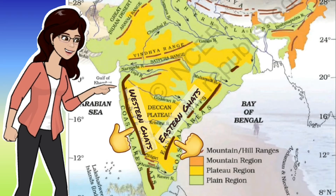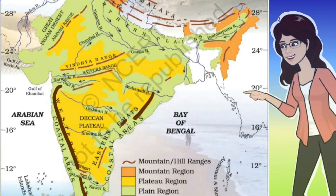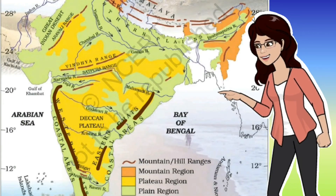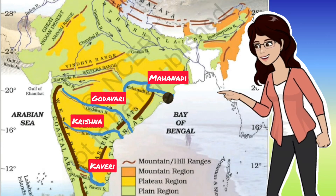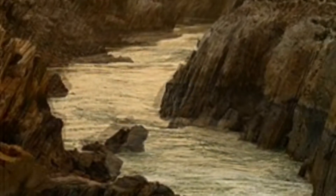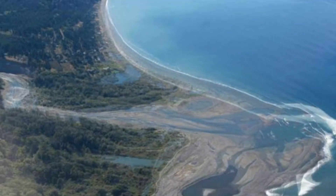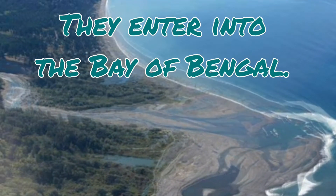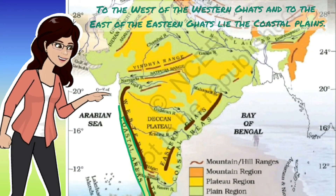But why are the Eastern Ghats broken and uneven? It is because many rivers pass through them — such as Mahanadi, Godavari, Krishna, and Kaveri. These rivers break the Eastern Ghats and make their way to enter the Bay of Bengal.